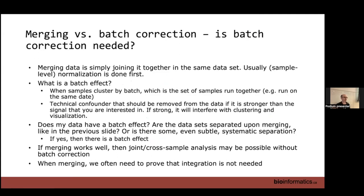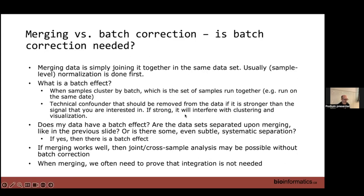The first question is whether batch correction is even needed. Merging is simply joining the data together in the same dataset — we normalize first and then join. We then need to assess whether there's a batch effect present. A batch effect is when some samples cluster by batch — a set of samples run together using a particular day at the core facility or a particular technology. It's a technical confounder that should be removed from the data, especially if it's stronger than the signal we're interested in. If it's fairly weak and doesn't outcompete our main signal like cell types, we might not need to worry about it.